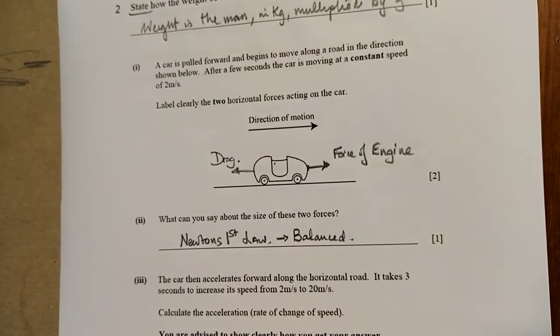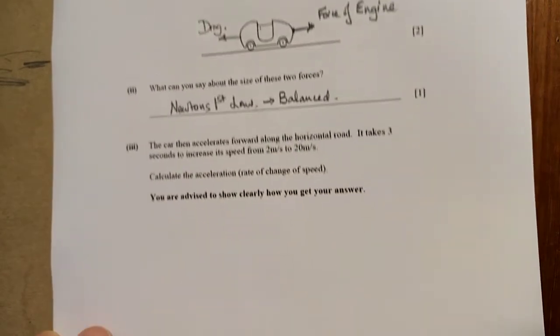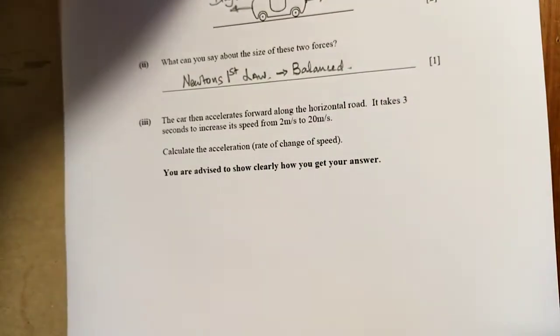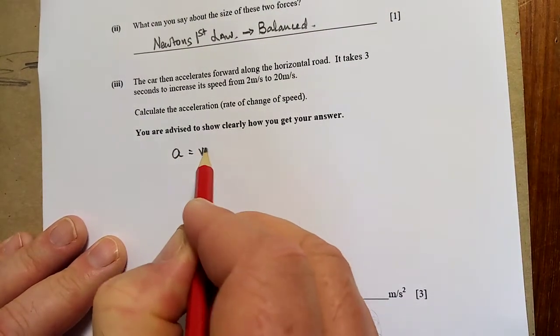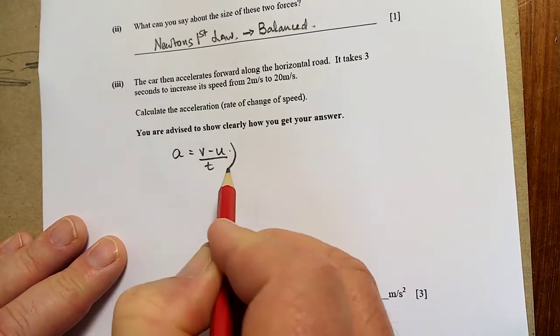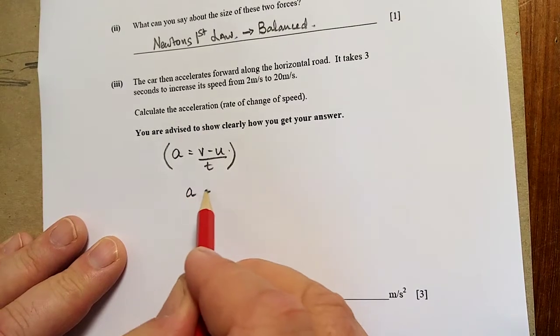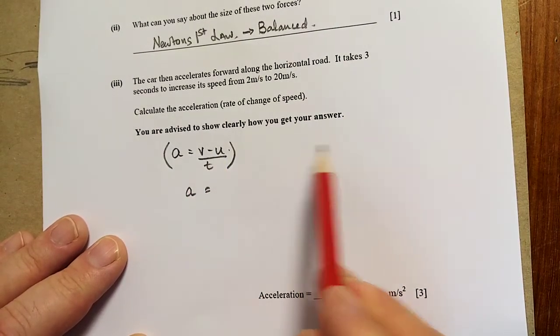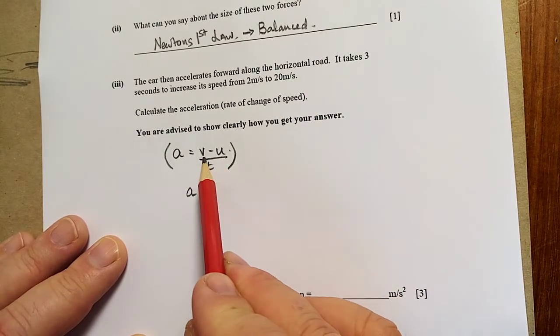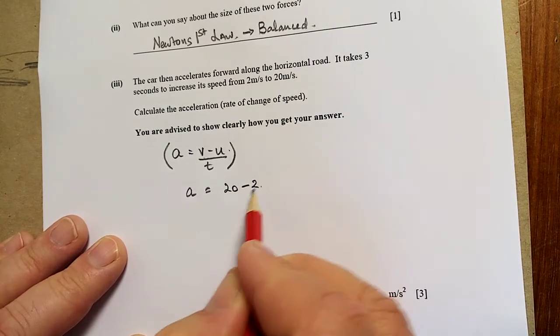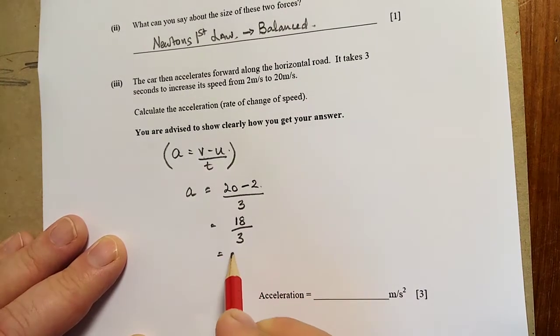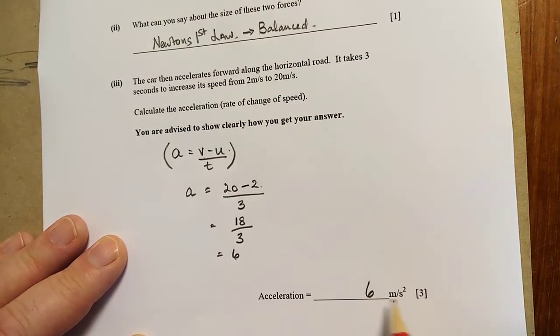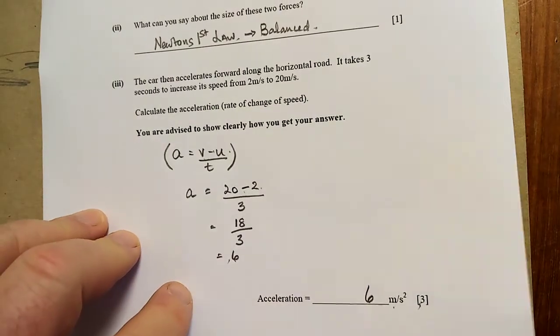The car then accelerates forward along the horizontal road. It takes three seconds to increase its speed from 2 to 20. Calculate the acceleration. Well again, you just do it. We're looking for three marks here. So one's for the formula. A equals V minus U over T. So A plus the final velocity. Remember it goes the same as the alphabet: R, S, T, U, V. So U is before V. So U is the initial and V is the final. So it's 20 take away 2 is 18 over 3 is 6 meters per second squared.